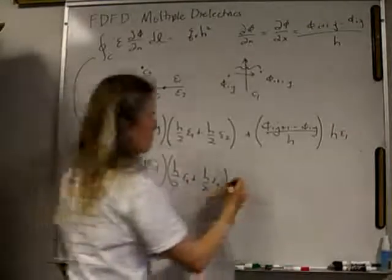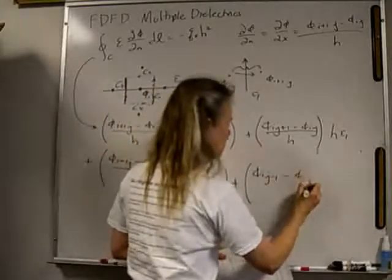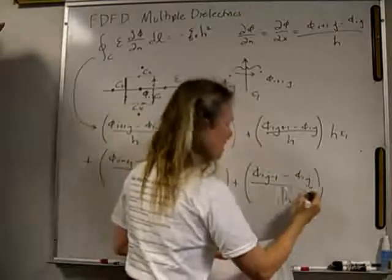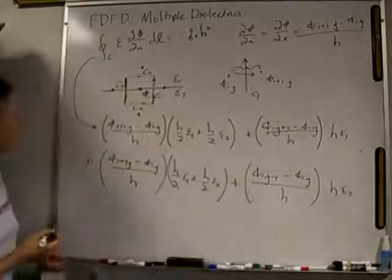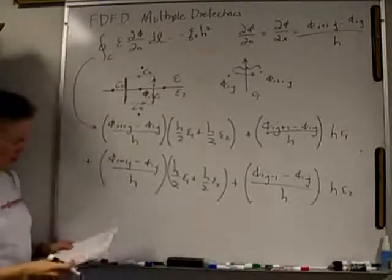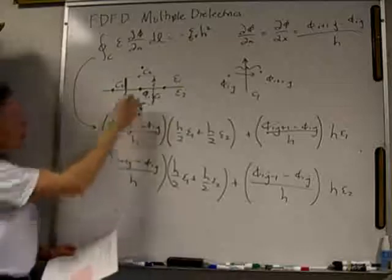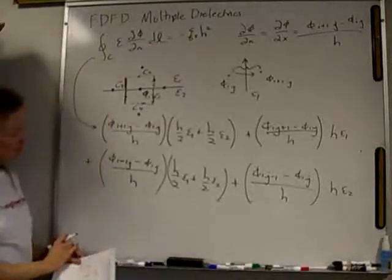Now let's do our bottom piece. This is going to be phi IJ minus 1 minus phi IJ all divided by H times H epsilon 2. So here's my contour integral for the normal derivative times DL, which is going to be H times epsilon. That's each of my pieces here.